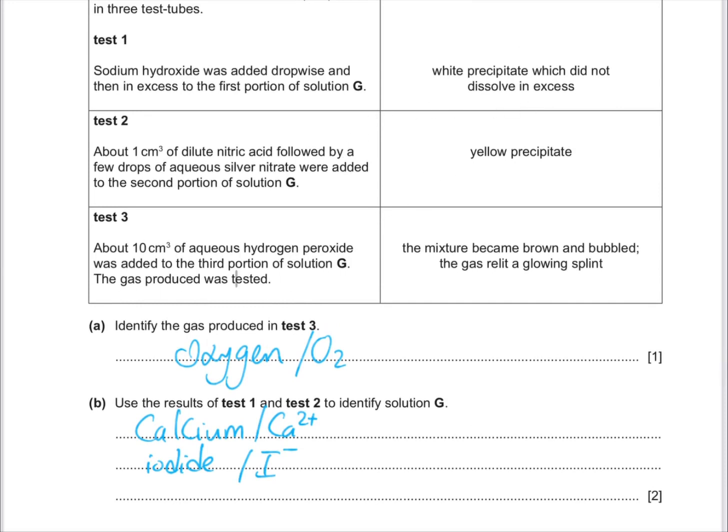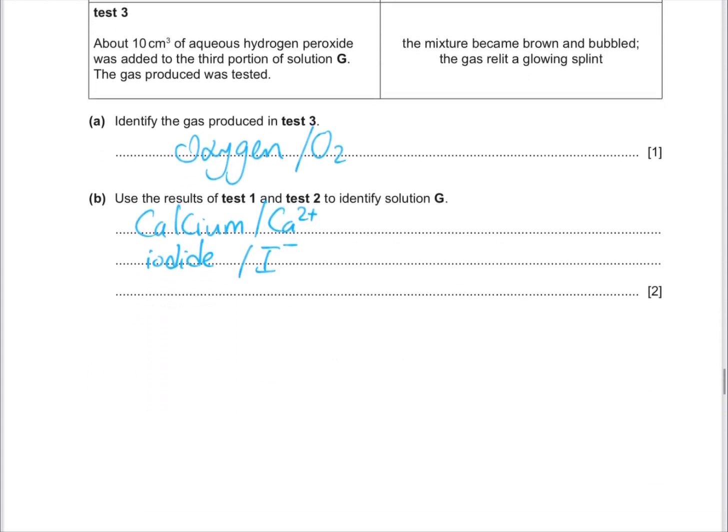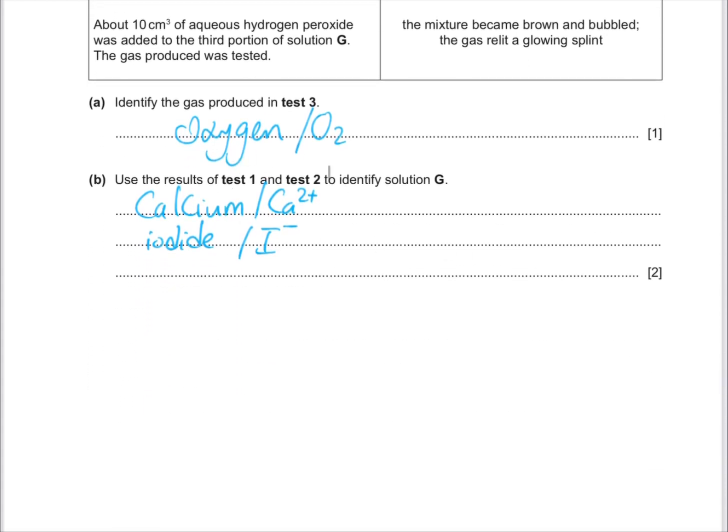Then we took aqueous hydrogen peroxide and added it to the third portion. The mixture becomes brown and bubbles of gas. Relight a glowing splint. And this tests for oxygen.